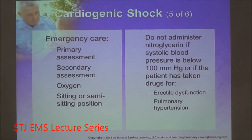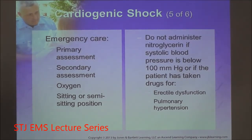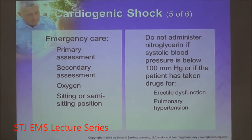Emergency care begins after scene safety and primary assessment with airway management — you may need to take over the airway aggressively to treat the pulmonary edema with positive pressure ventilation. If the patient is awake, assist with oxygen and position of comfort. Do not give nitro if blood pressure is below 100, as that lowers blood pressure and works against what the body is trying to do to restore perfusion.